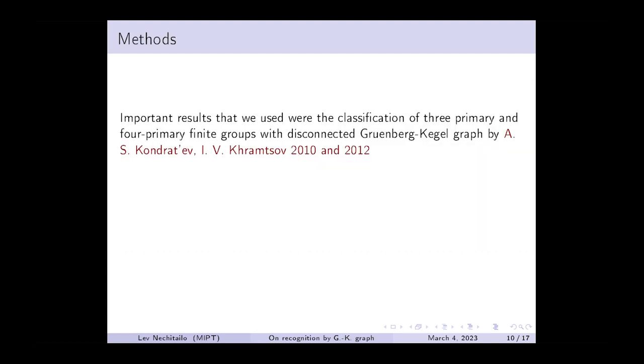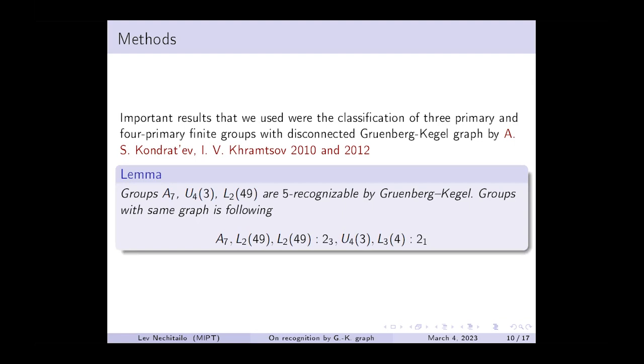Now I'm going to discuss the methods we use. One of the important results is the classification of three- and four-primary groups with a disconnected Gruenberg-Kegel graph by Anatoly Kondratiev and Ilya Khramtsov. As an example, based on this classification, we get this lemma, which, in my opinion, is quite pretty because we have here five recognizable groups. And as you can see, the non-abelian radical is distinct from what we have here.